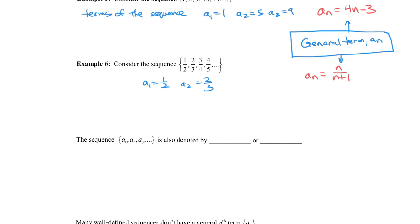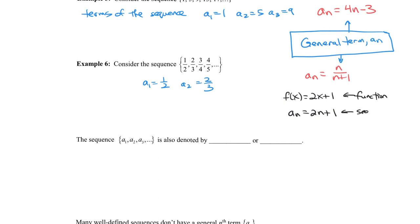The general term should feel somewhat familiar. With functions, we'd write f(x) = 2x + 1, where x can be any real number. With sequences, we write a_sub_n = 2n + 1, but the difference is that the inputs are integers. So sequences and functions are the same idea, but the inputs for sequences are integers rather than all real numbers.